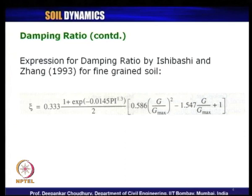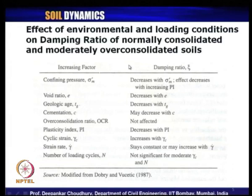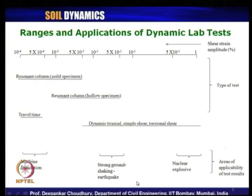The damping ratio is a function of G/G_max value and plasticity index. The effect of various environmental and loading conditions on damping ratio values for normally consolidated and moderately over-consolidated soils — showing how damping ratio changes with increasing parameters — was mentioned by Dobry and Vucetic in 1987. An important chart shows the ranges and applications of various dynamic laboratory tests: resonant column test with solid or hollow specimen, travel time method, dynamic or cyclic triaxial test, cyclic simple shear test, and cyclic torsional shear test, based on their ranges of shear strain amplitude.